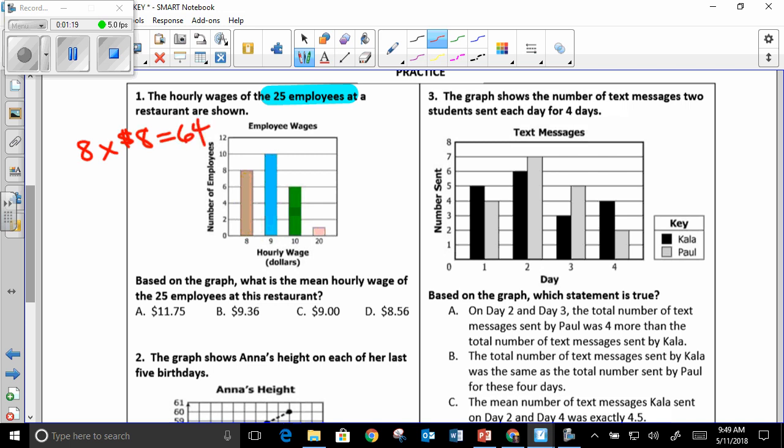You have 10 people that made $9 an hour, which gives you 90. And then you have six people that made $10 an hour. That gives you 60. And then you had one person that made $20 an hour. So that would give you 20. So I think that's where the confusion was.